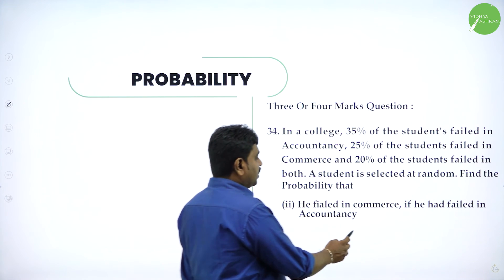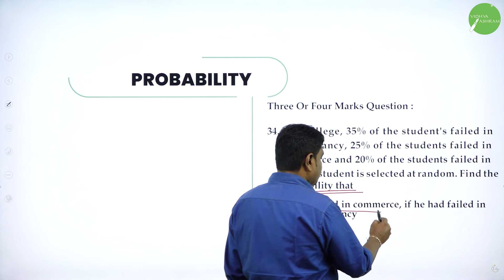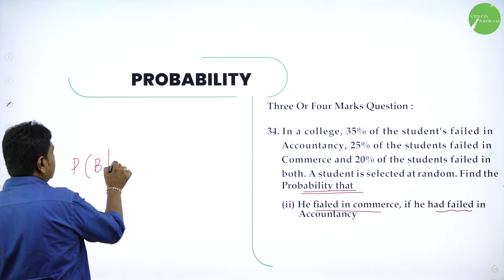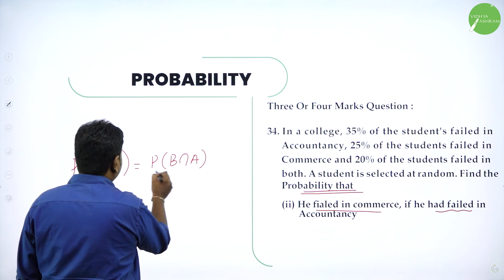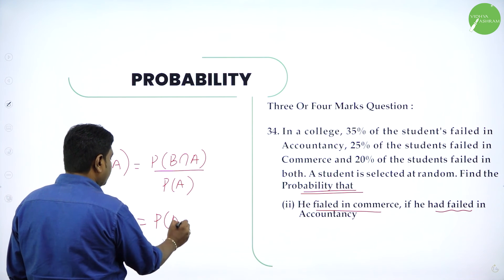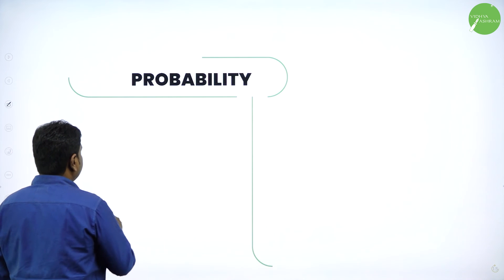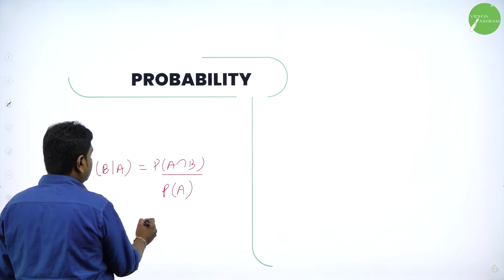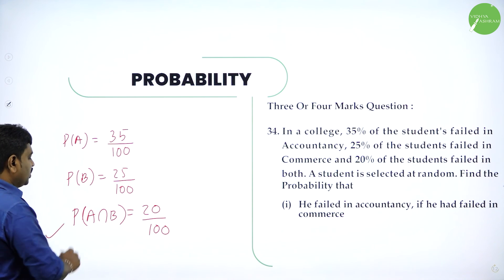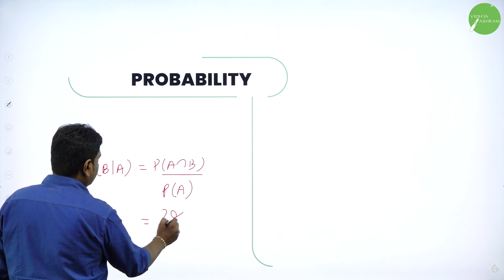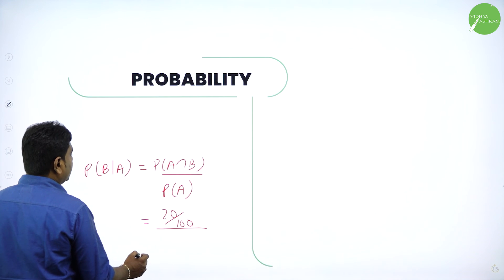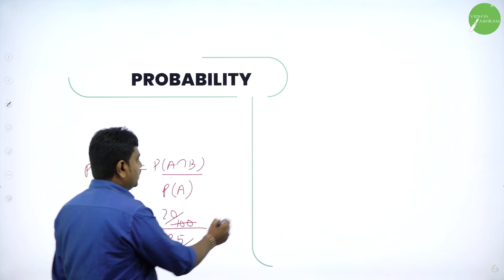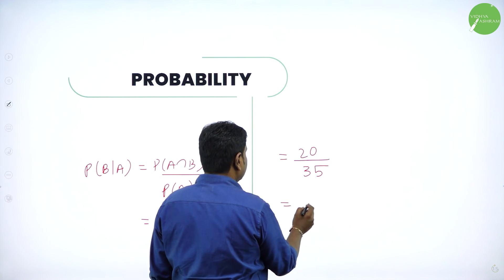Now the second part: find the probability that he failed in commerce, given that he failed already in accountancy. They want P(B|A) — P(B∩A) divided by P(A). P(B∩A) is same as P(A∩B) = 20/100. P(A) = 35/100. Cancel the 100s: answer is 20/35. Both are divisible by 5, so the answer is 4/7.